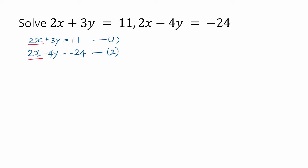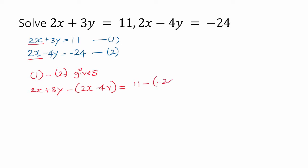If we subtract equation number 2 from equation number 1, what do we do? 2x plus 3y minus of 2x minus 4y equals 11 minus minus 24.